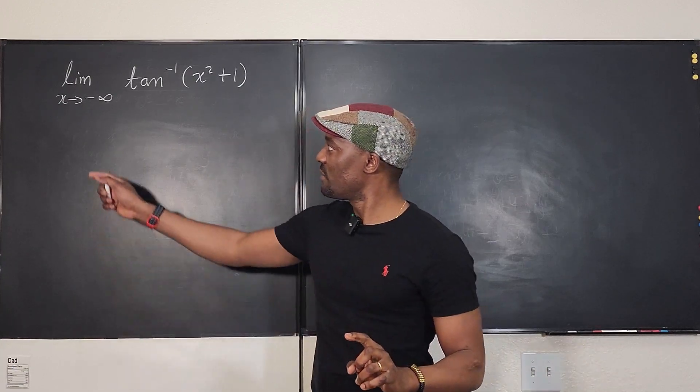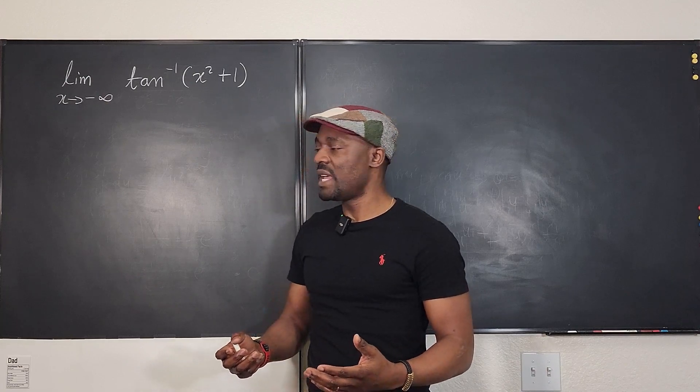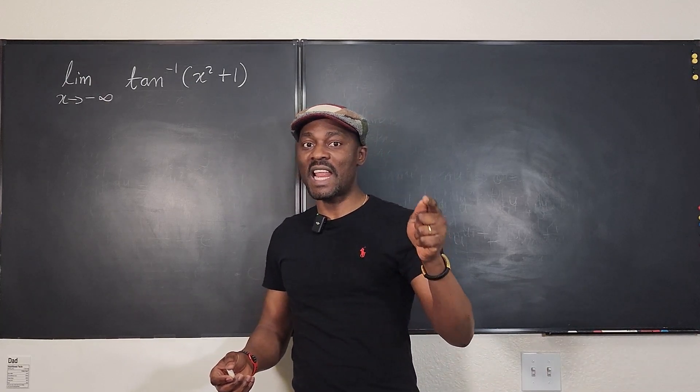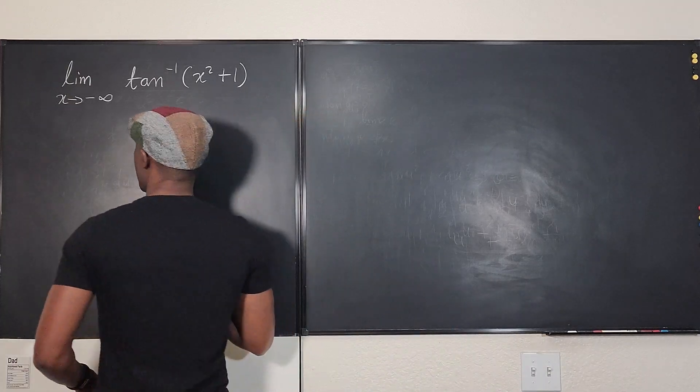So what we're going to do is instead of using x, we're going to use t. I'm going to replace x with negative t so that as x goes to negative infinity, t is going to infinity.